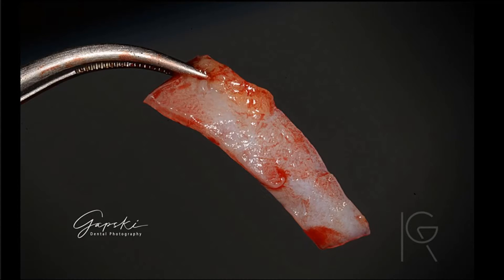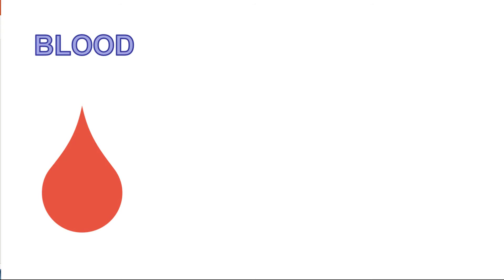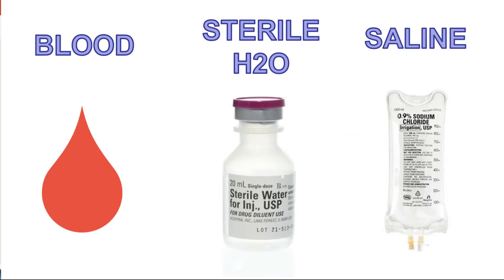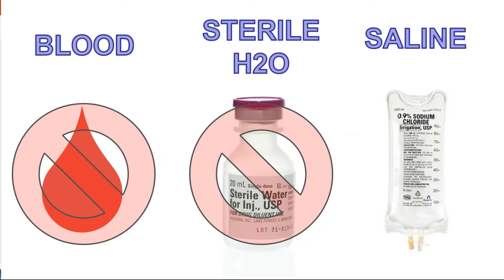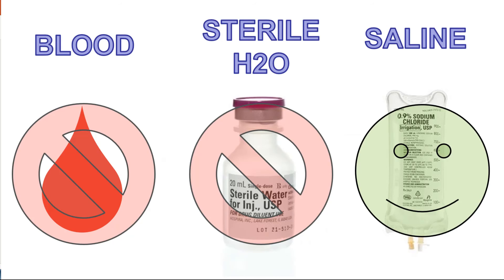After we remove completely the graft from the donor site, where should we place it as we work in the recipient side? The literature mentions that several grafts can be placed on blood, sterile water, and saline solution. In our case, connective tissue graft should not be mixed with blood, because with coagulation of the blood the pH is going to be reduced, causing cell death. Sterile water should not be used also, because it is not an isotonic solution and it will cause cell lysis over time. So the ideal solution to place your connective tissue graft while you work in the recipient side is saline. You have enough time to start suturing the palate, leaving this graft in saline until you start working in the recipient side.